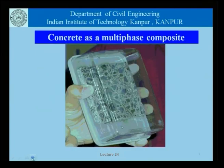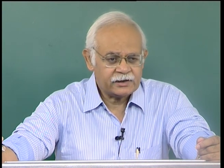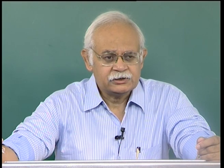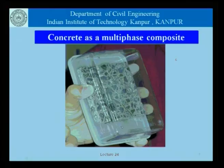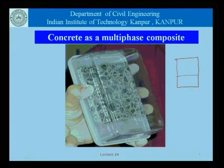Let us look at this picture which shows concrete as a multiphase composite. We have looked at this picture before, but that was from the point of view of proportioning a concrete mix. The focus was that there is a certain volume of material which has to be filled, and we would place a certain amount of coarse aggregate, sand, cement and water to make concrete.